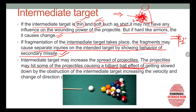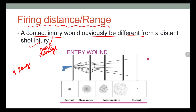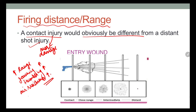Firing distance or range can also affect wounding. A contact injury is more damaging compared to injury caused by a projectile fired from a distance, because with increased range we see increased yawing, tumbling, and air resistance. All of these negatively affect the wounding ability of the projectile. The closer the range, the more injury the bullet is going to cause.